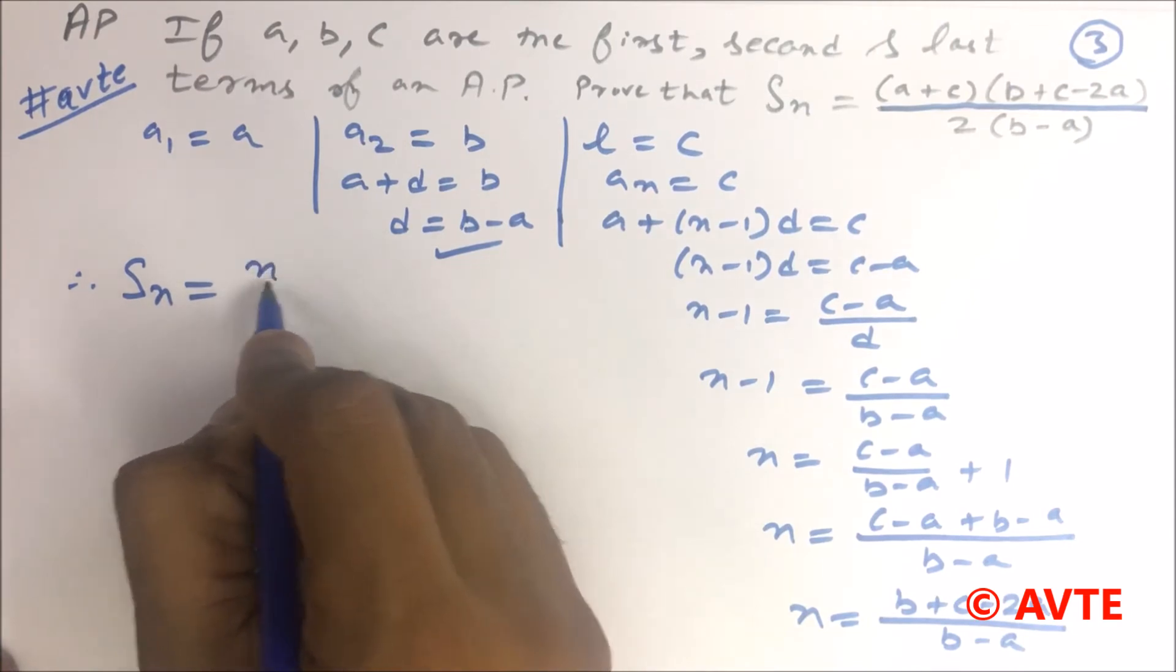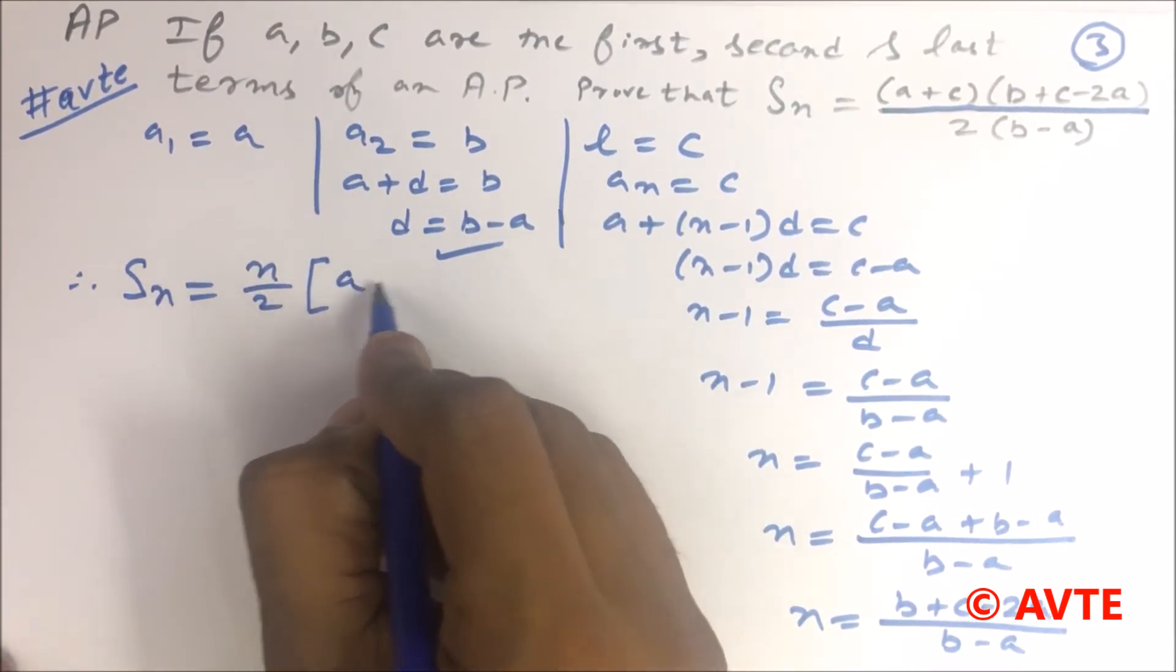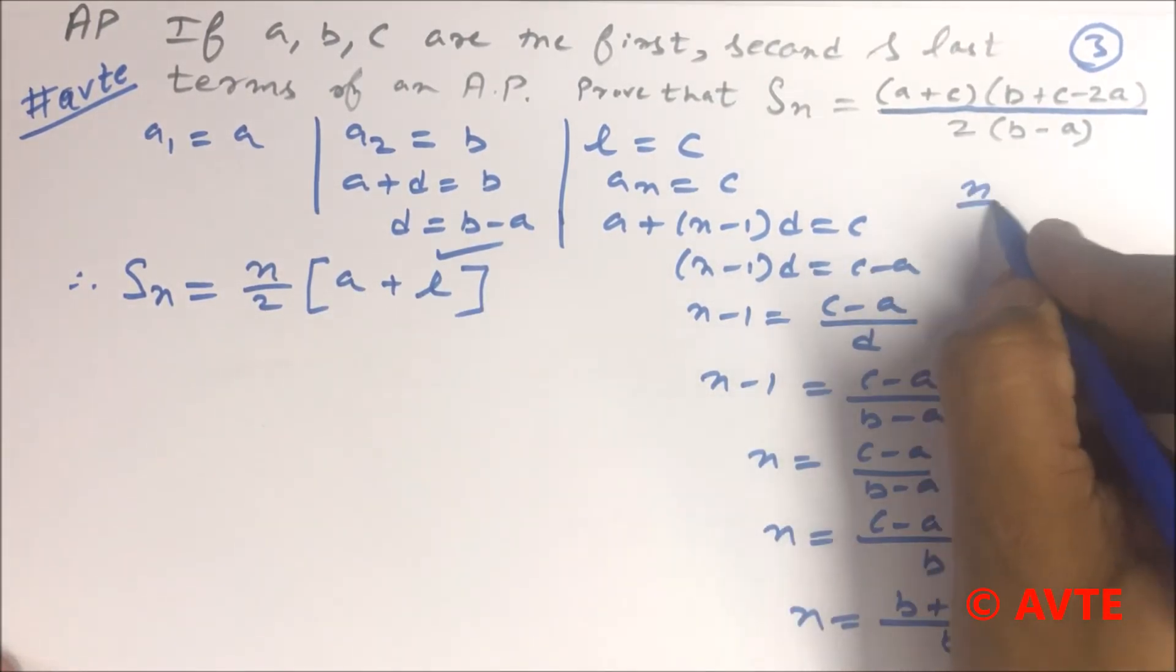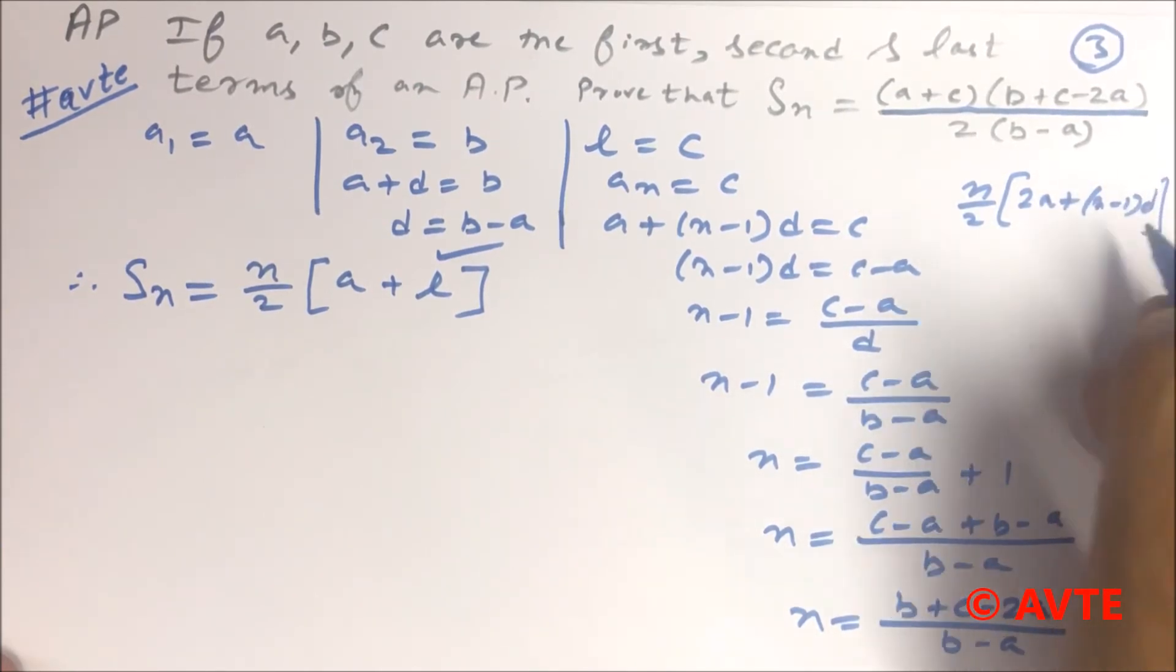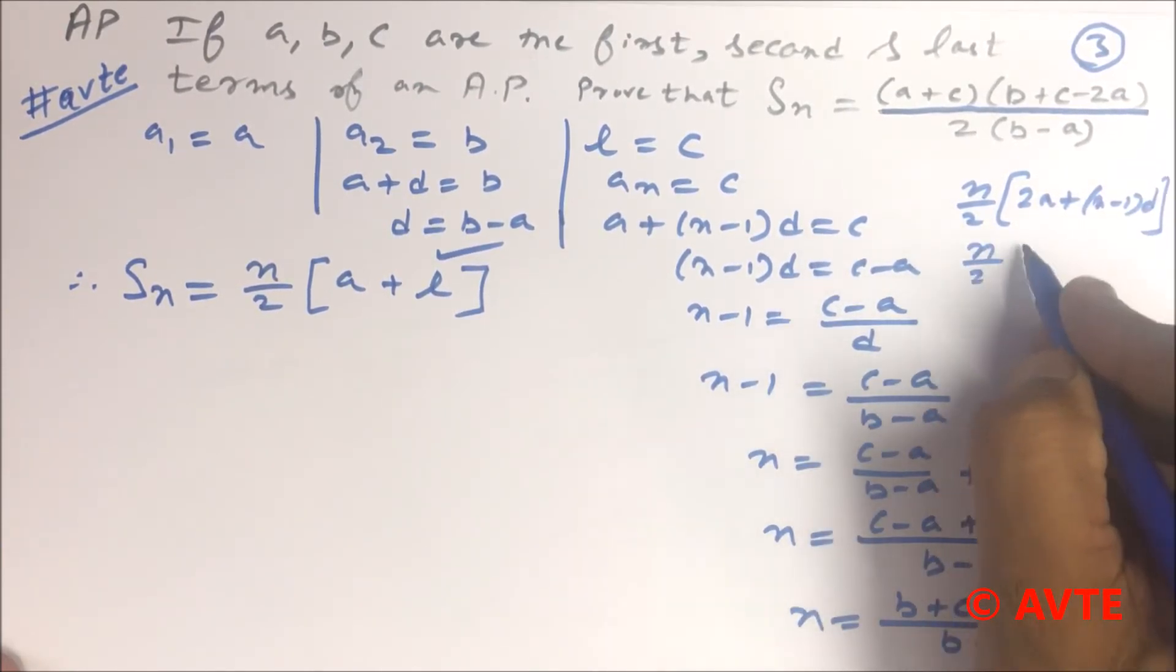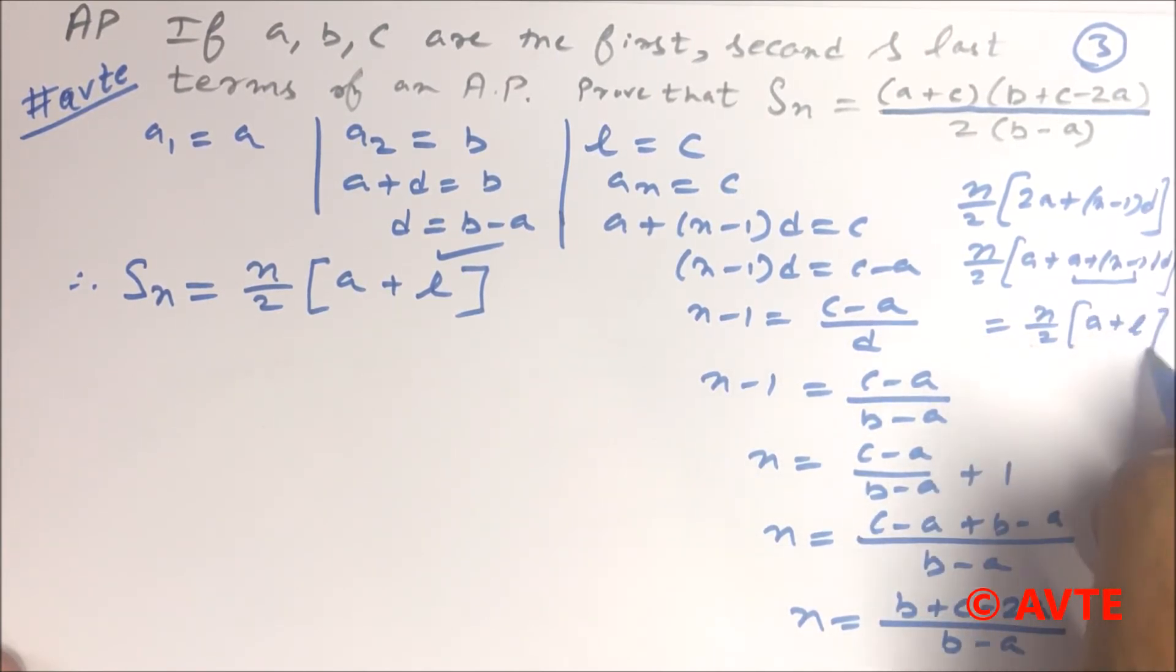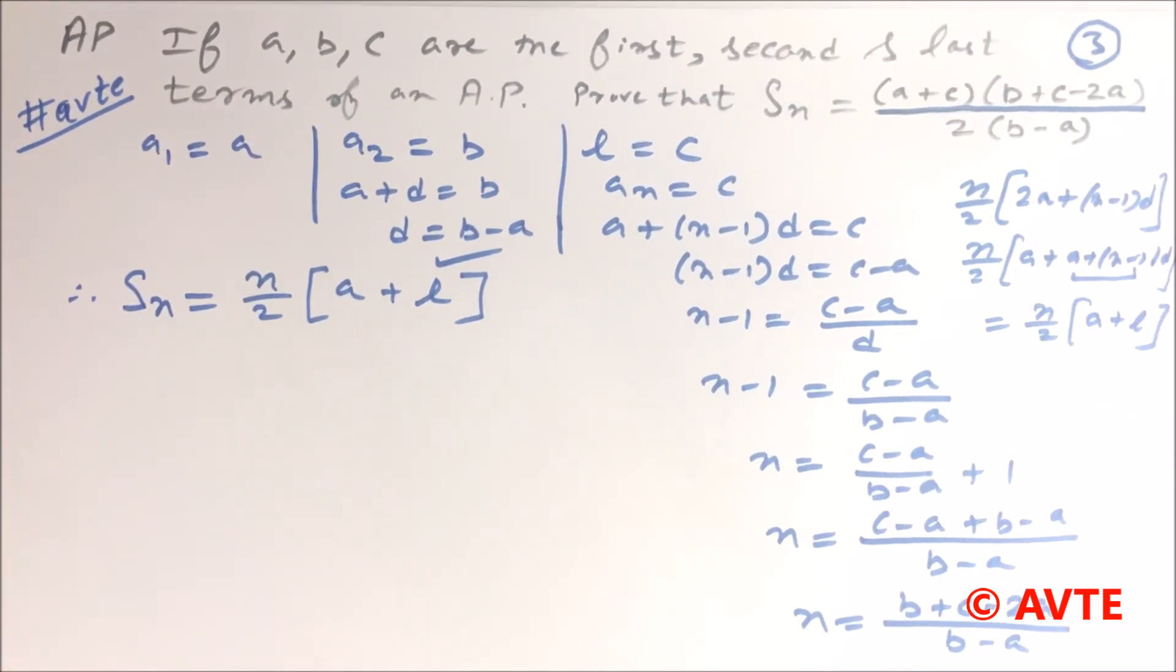The formula is N by 2 times (first term plus last term). We can apply this formula. There's one more formula: N by 2 times (2A plus (N minus 1)D). If you open this, it's A plus A plus (N minus 1)D, and this is your AN, which is the first term plus last term. Because every term is not the last term, but every term is a general term, so we can write down the last term as the general term.